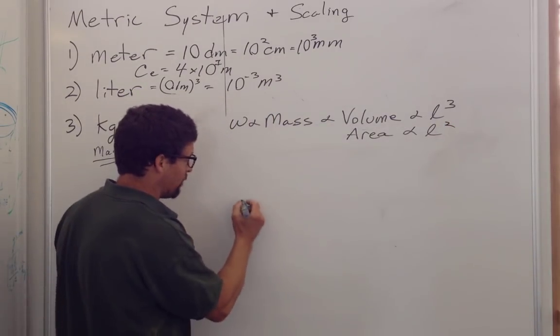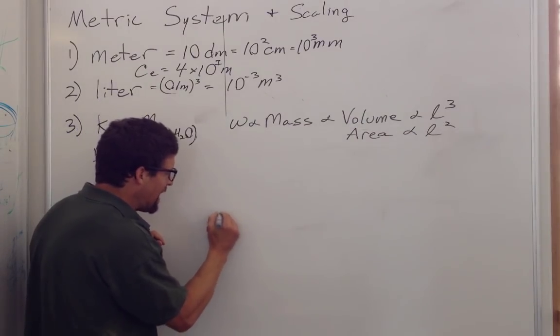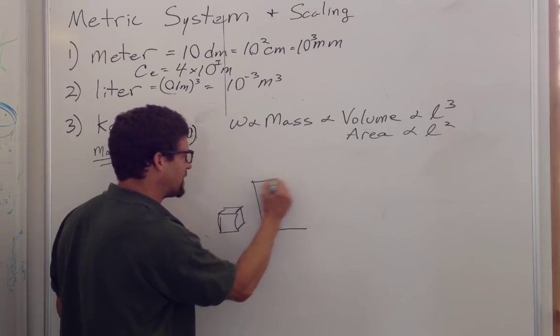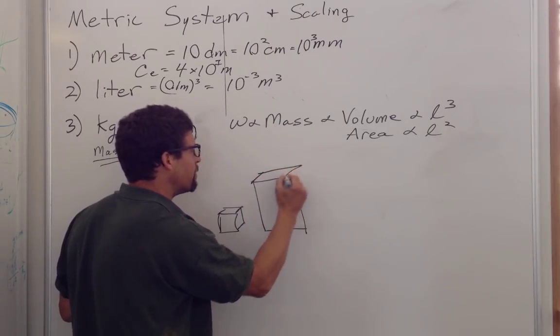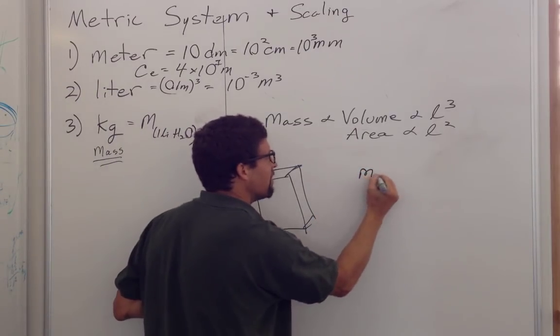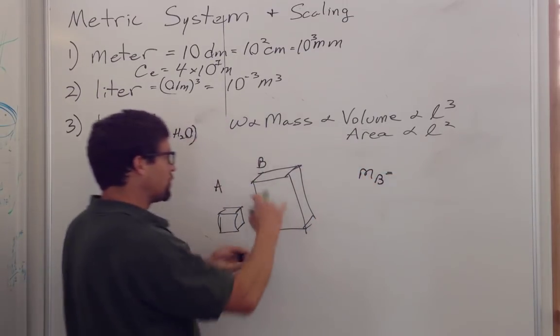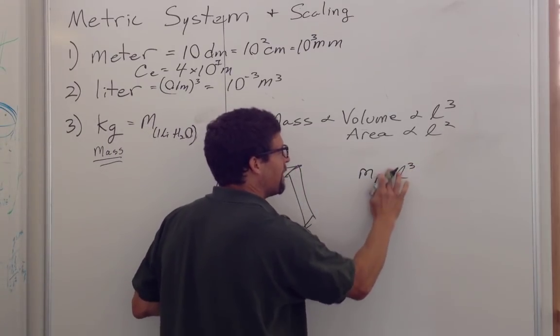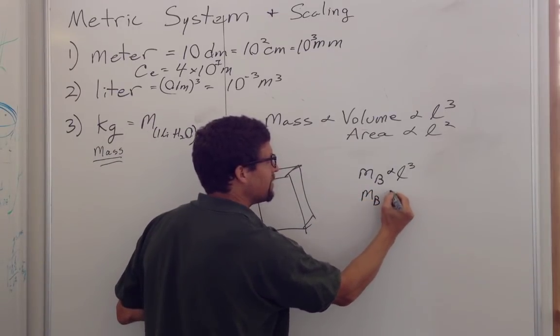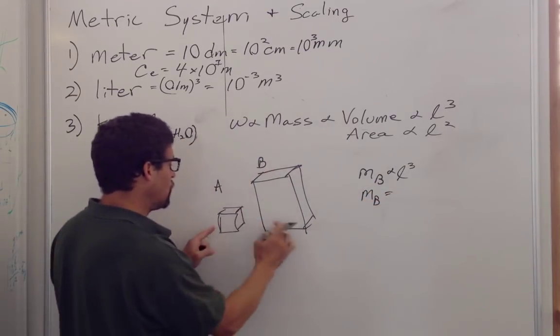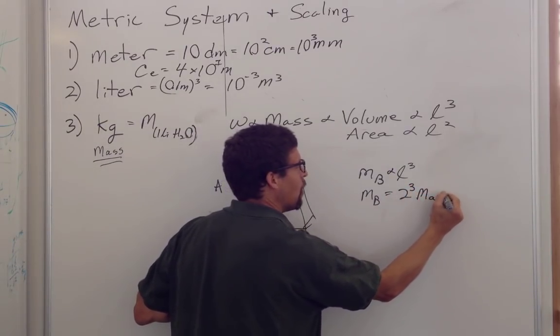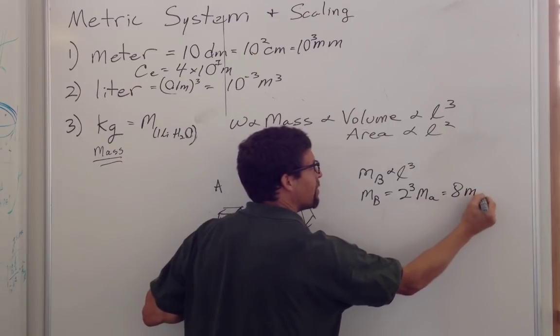Because if we look at two animals, so we have animal A looks like this, and animal B is twice the size of animal A, twice as high, and twice as deep. So it's pretty clear that the mass of B is equal to the length cubed. The mass of B is proportional to the length cubed. So the mass of B is equal to 2 times 2 times 2, 2 cubed times the mass of A, or 8 times the mass of A.